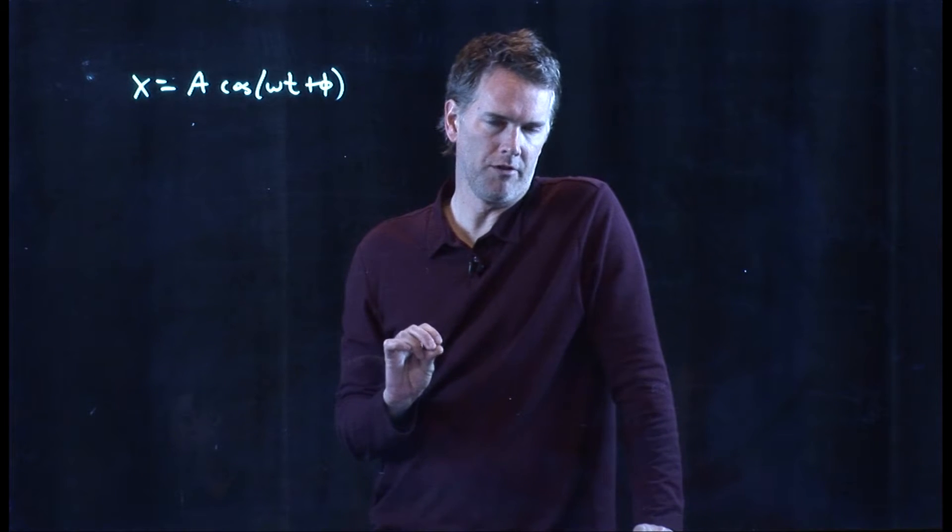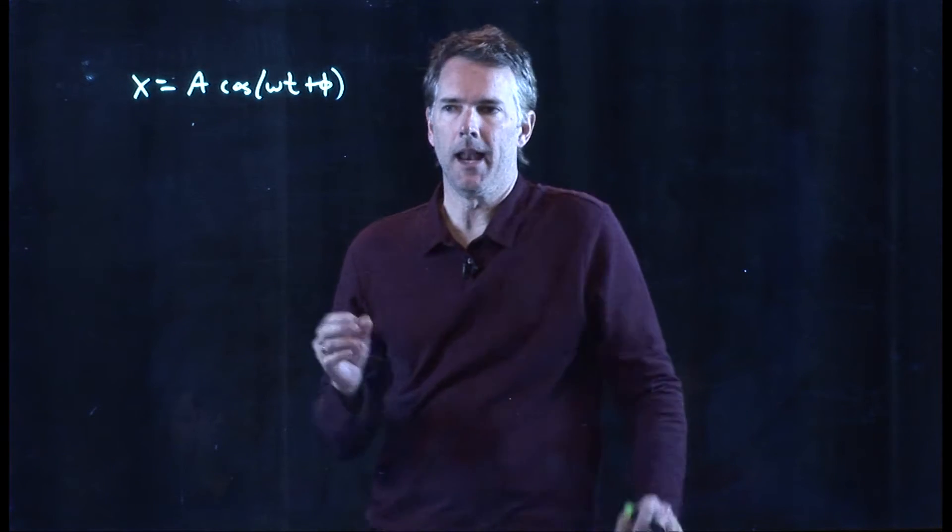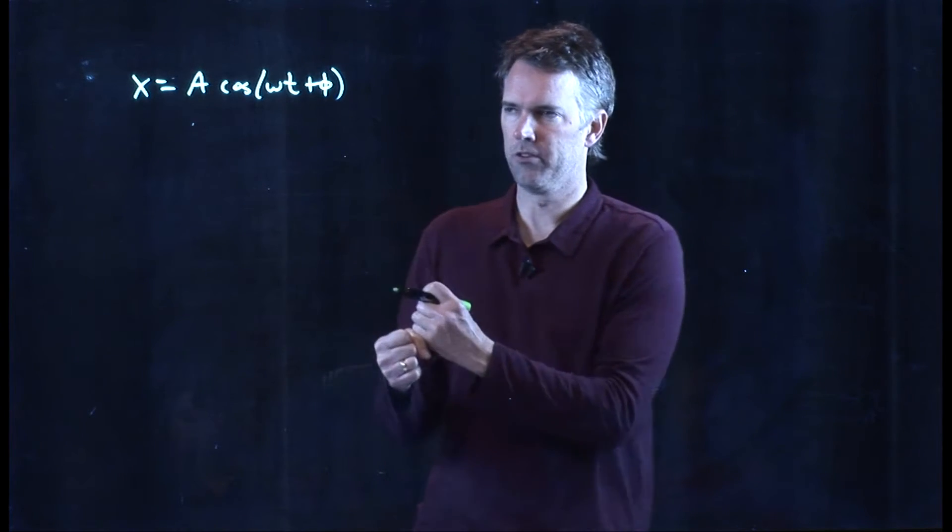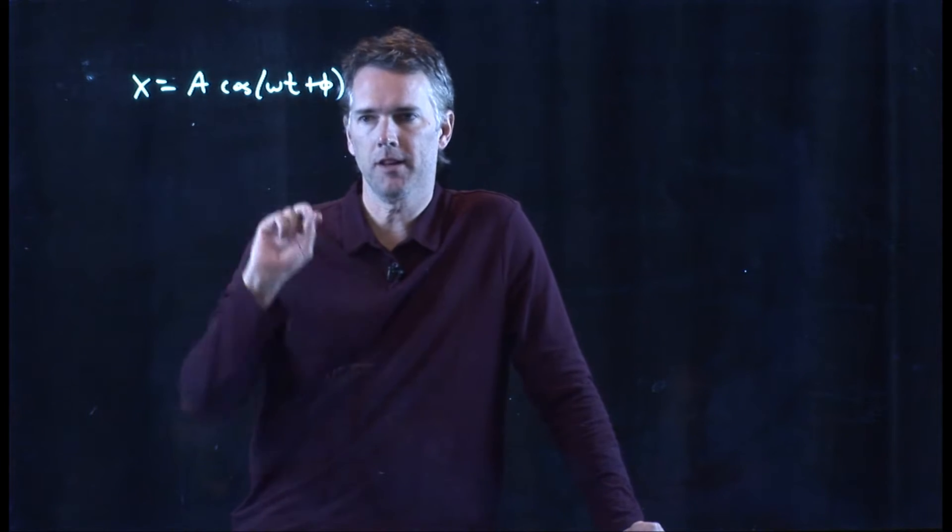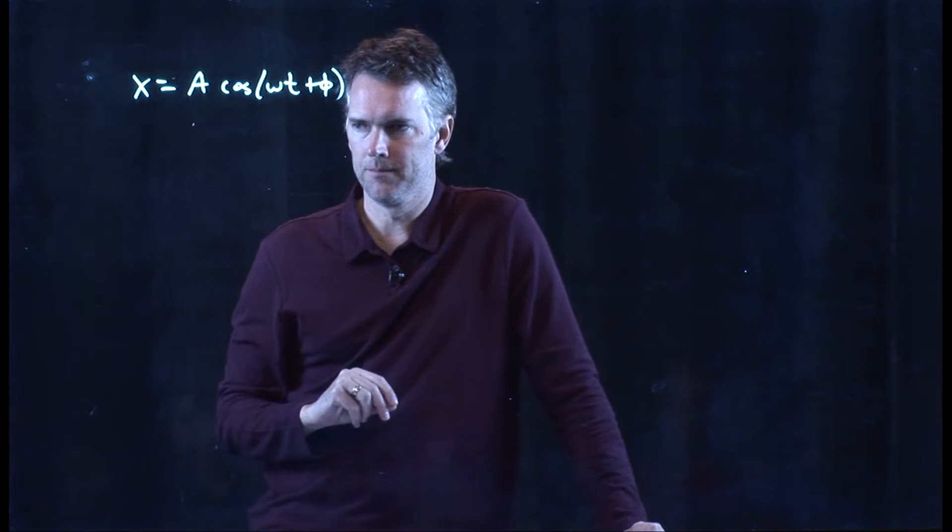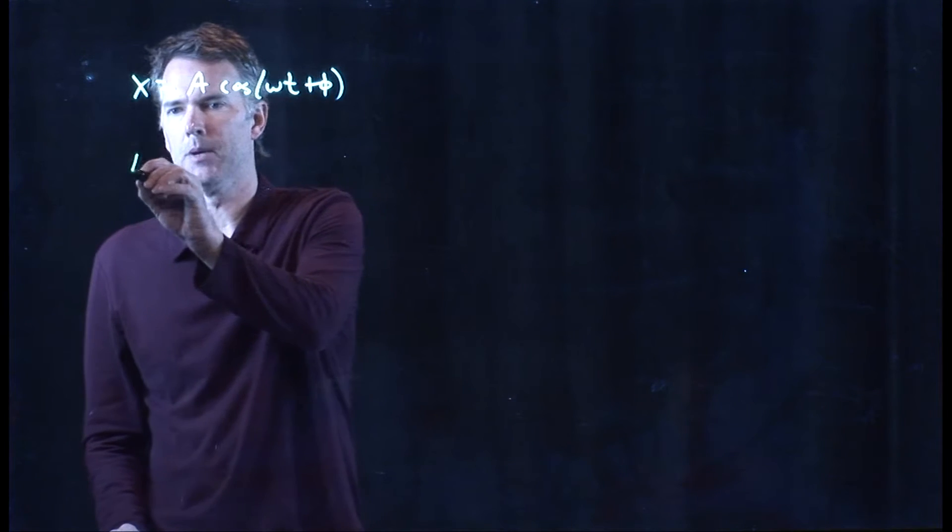Let's look at the general solution for simple harmonic motion. When we had a block on a spring and it was going back and forth, what we solved for was the position as a function of time. And it looks like this. It goes like a cosine.